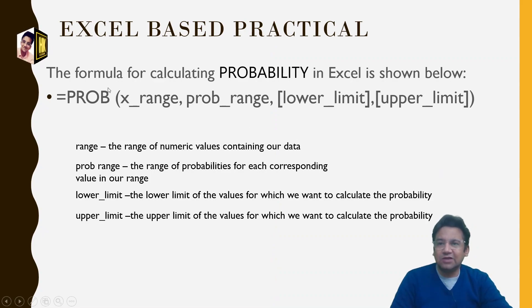Now in Excel, how will you calculate the formula of probability? It is given by equal to, you will write P-R-O-B bracket start X-range.